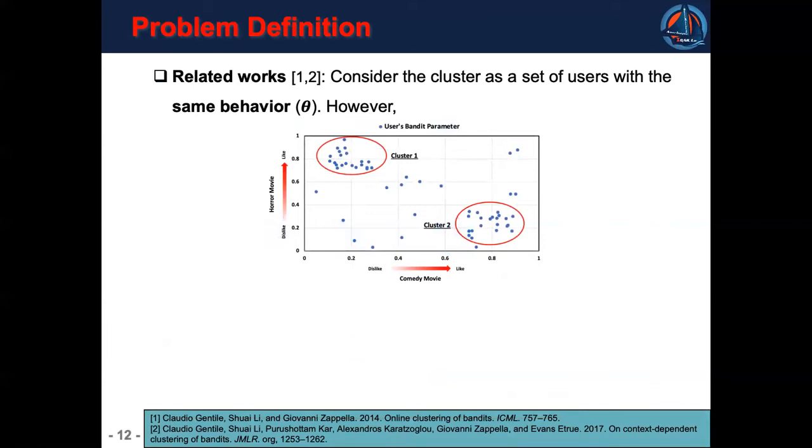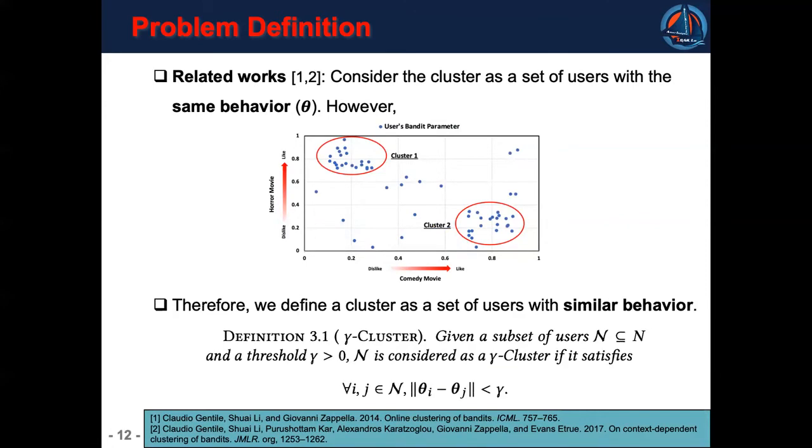There are some existing works that have studied user clustering in multi-arm bandit. However, they consider a cluster as a set of users with exactly the same behavior represented by theta. In fact, users usually have similar behavior rather than same behavior. Therefore, we define a cluster as a set of users with similar behavior. Formally, for any two users, the difference between their user parameters needs to be smaller than a threshold, where gamma is predefined by the learner.